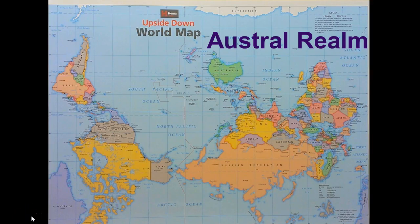Welcome to the lecture presentation on the Austral Realm. This map will show a slightly different perspective than most of us are used to. It's important to remember that it is arbitrary that we put north on the top of maps. We will find that Australia and New Zealand, which comprise the Austral Realm, are among the most isolated populations on Earth.